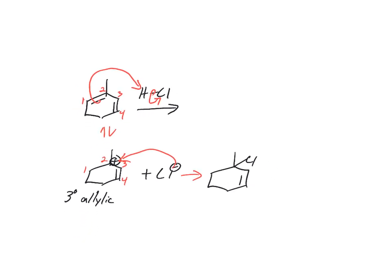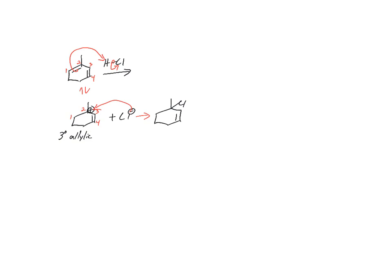But the other part of this question says they ask for the less stable resonance form. So let's maybe redraw the original tertiary allylic carbocation. Can we draw a resonance form for this? We can.